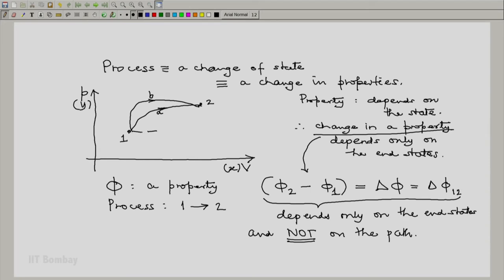If I consider a non-quasi-static process from 1 to 2, let us say C, again I will have the same change in properties, because the properties depend only on state 2 and state 1, and hence the change in property will depend only on the end states and not on the path.